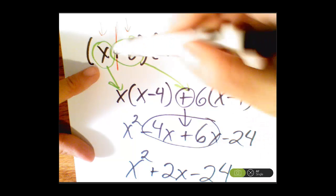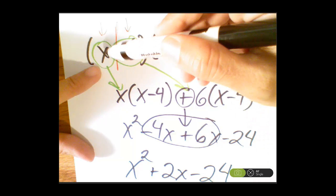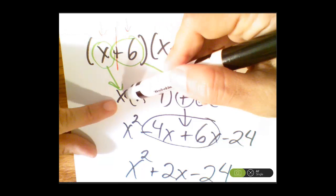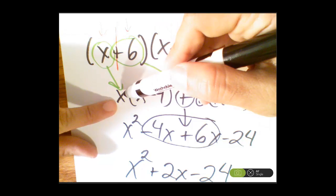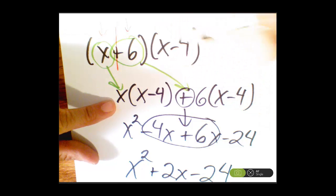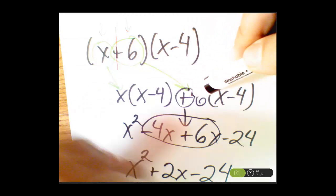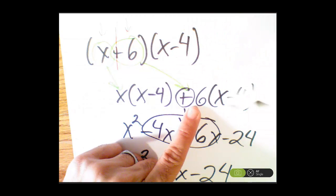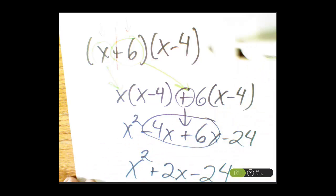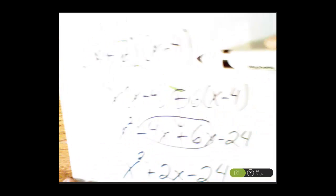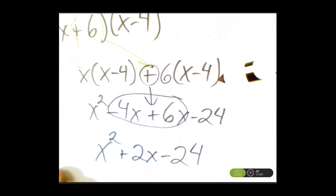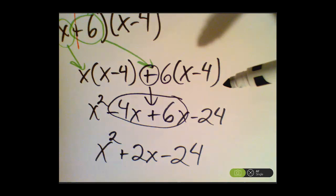Once again, I took the first monomial, dropped it down, multiplied it times this binomial, and I took the second monomial and multiplied it by the same binomial from up here. If you were to FOIL this, you would get the same answer. I'm going to turn off the super bright light of destruction, and let's see how that goes.